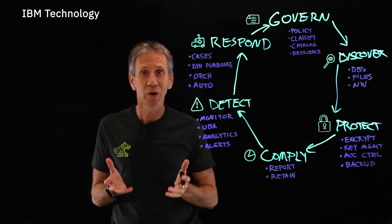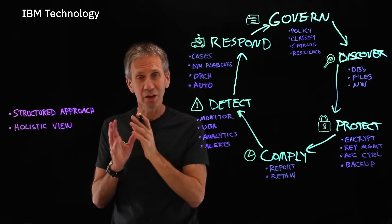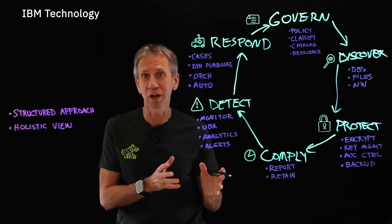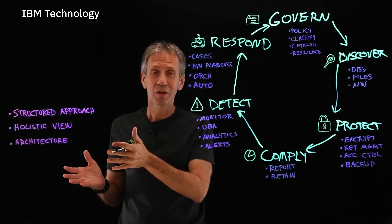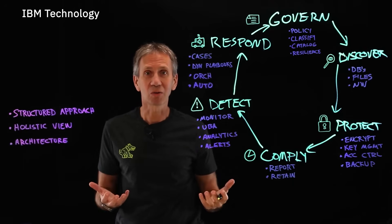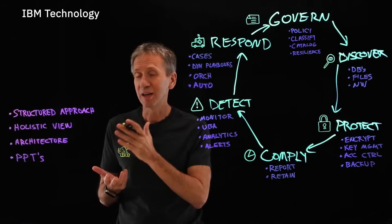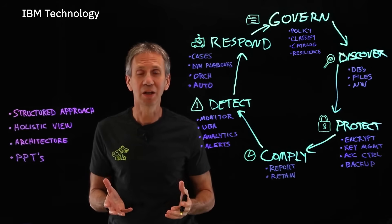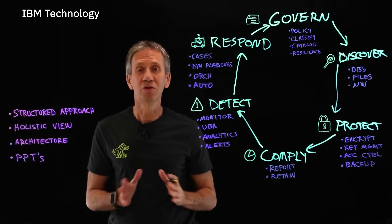The good news is there is a way to do this. It requires a structured approach and a holistic view — not just looking at individual pieces like only the databases but not the files, or only the structured data while ignoring the unstructured data. A holistic view is going to be critical. Also, the right architecture: building the data security components in place, using the right technologies, and having them all integrate. And ultimately the good PPTs — people, process, and technologies — are the things that will implement a data security policy that makes information available only to those who need it.